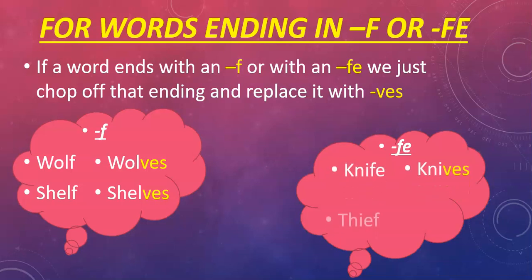For words that end in FE, like KNIFE, we knock off the F and the E and we replace it with VES. KNIFE becomes KNIVES. How will we spell THIEF? THIEF. Knock off that F and add on VES.